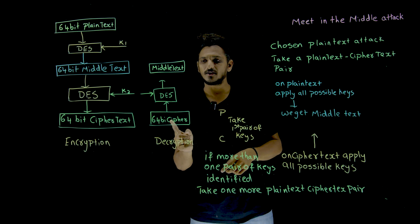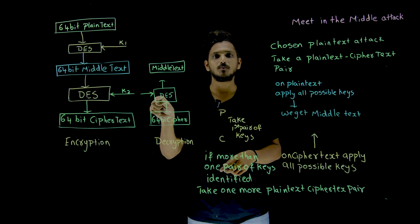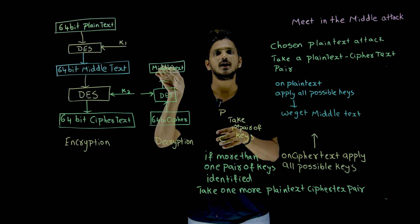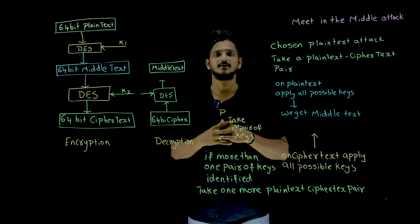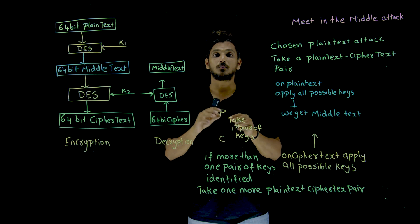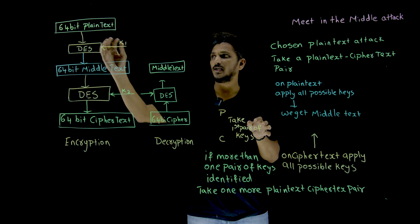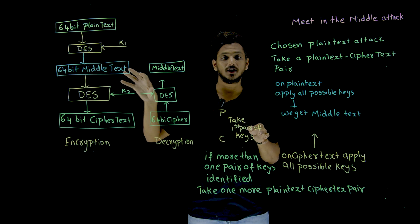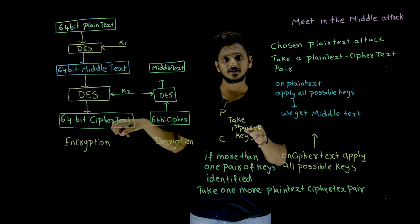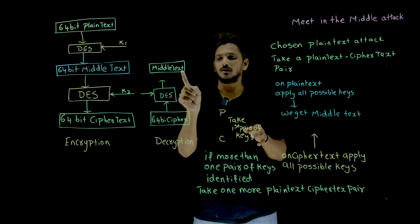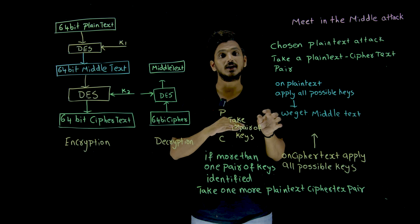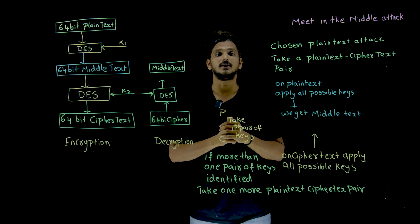Similarly, you also have the ciphertext. If you apply all possible keys to the ciphertext and perform decryption, you get the middle text. So plaintext is converted to middle text across 2 power 56 possibilities, and ciphertext is converted to middle text across 2 power 56 possibilities.